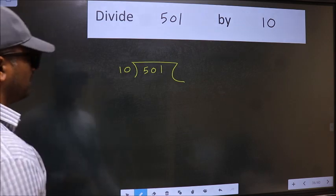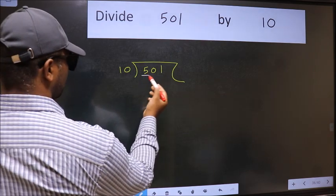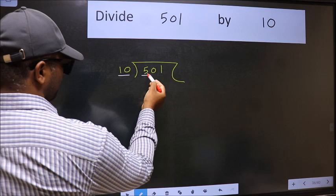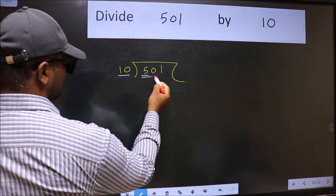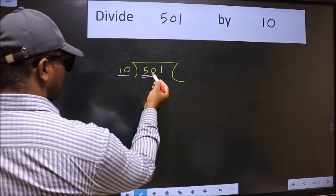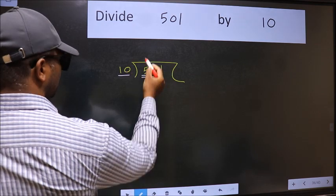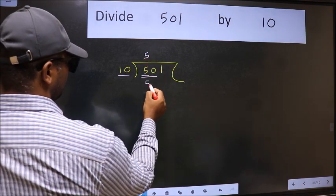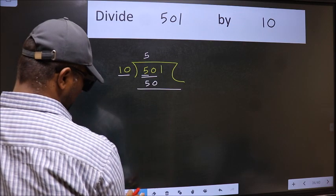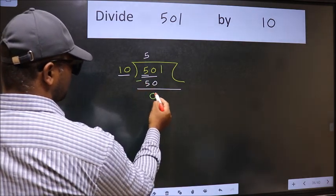Next, here we have 5 and here 10. 5 is smaller than 10. So we should take two numbers, 50. When do we get 50 in the 10 table? 10 times 5 is 50. Now we should subtract. We get 0.